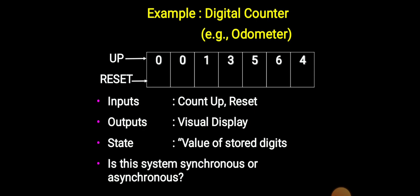Example: Digital counter. 0, 1, 3, 5, 6, 4. Inputs: count up, reset. Output: visual display. State: value of stored digits in the system. Synchronous or asynchronous.